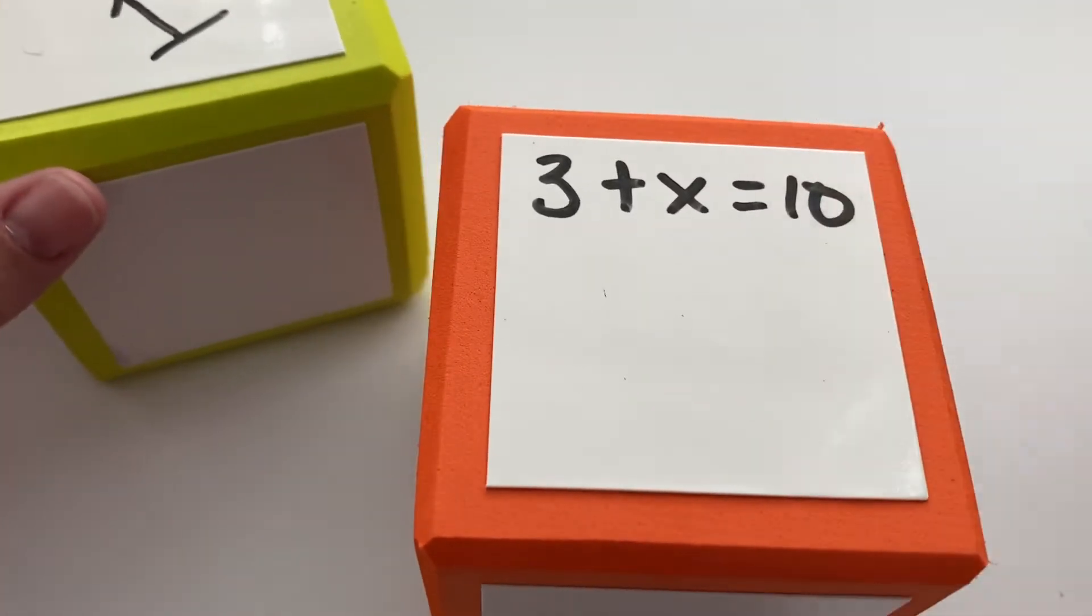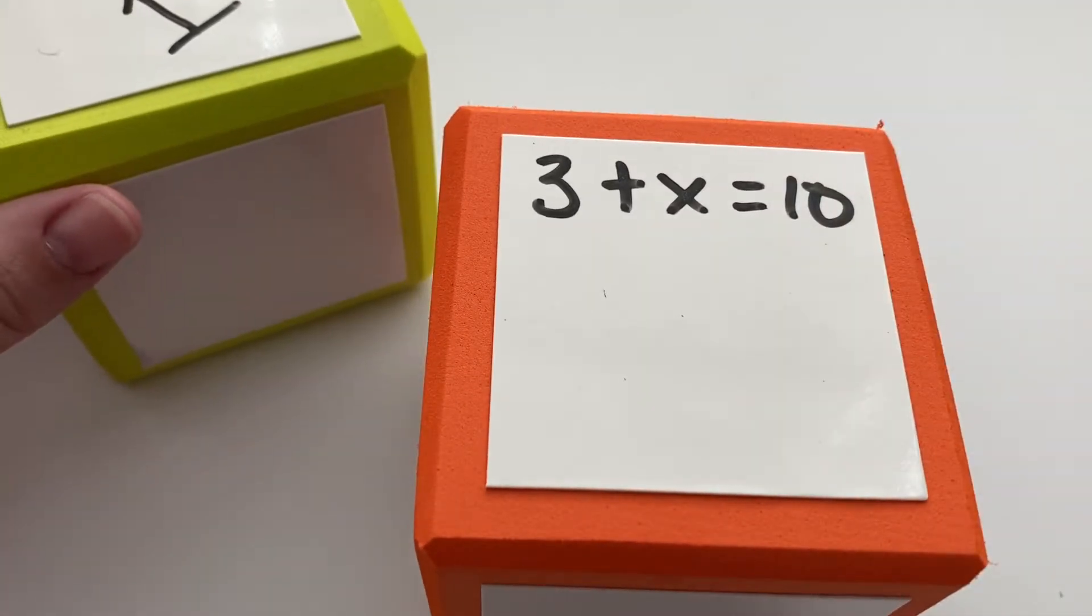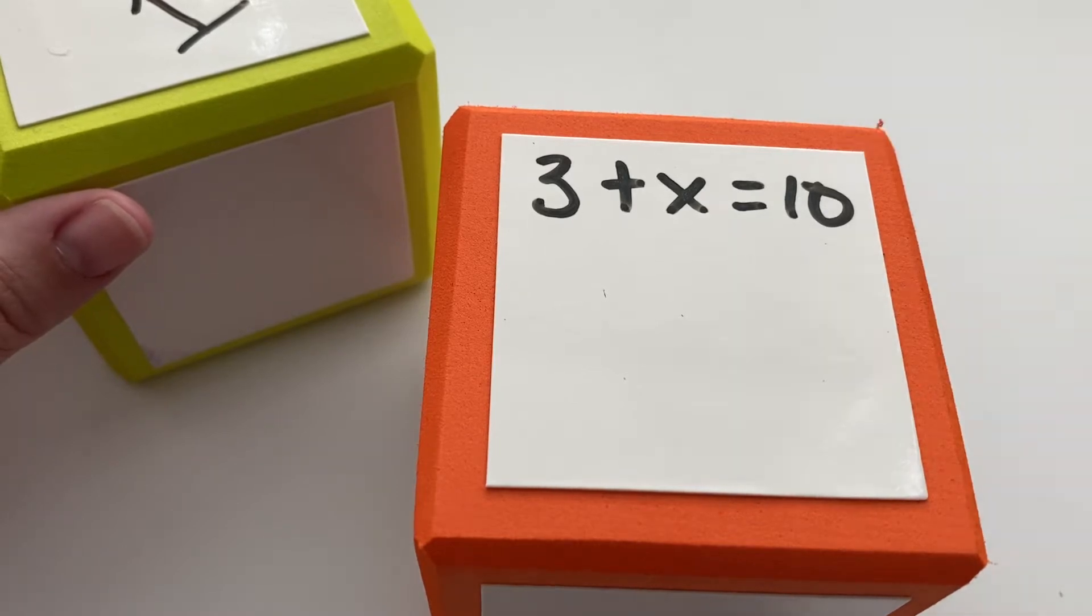Here's an example of an equation: 3 plus x equals 10. What makes it an equation is that it has an equal sign. The equal sign means equation. Equal equation, get it?